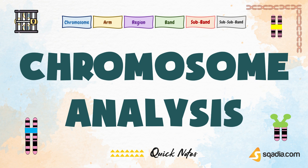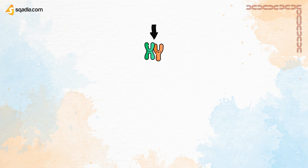The study of the number and structure of chromosomes is called cytogenetics. For this, we have to prepare a karyotype. A karyotype is an individual's complete set of chromosomes. Now let's discuss the preparation of a karyotype.